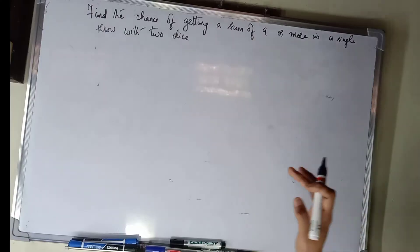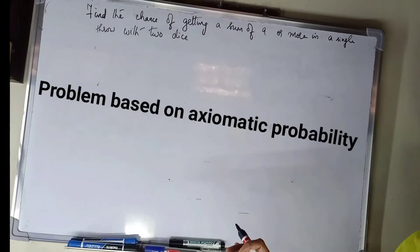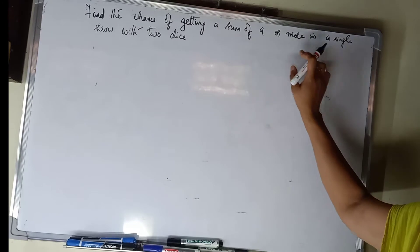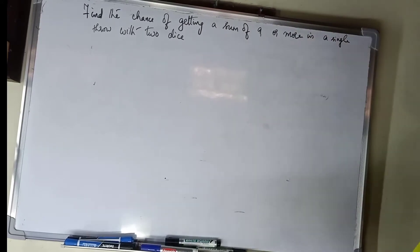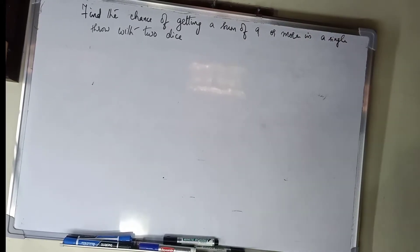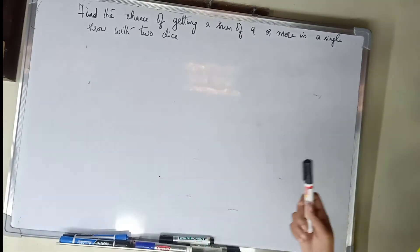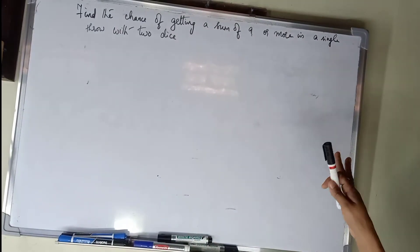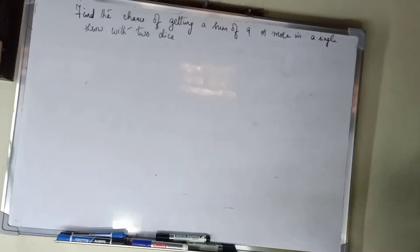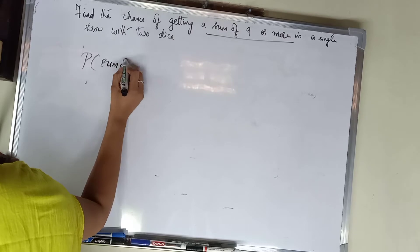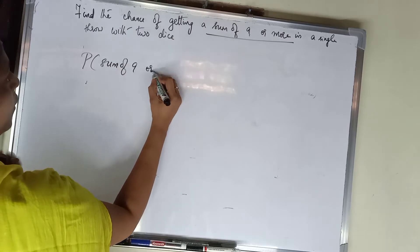Hello students. In this class we are going to ask you a question: Find the chance of getting a sum of 9 or more in a single throw with 2 dice. What is the probability of getting a sum of 9 or more?